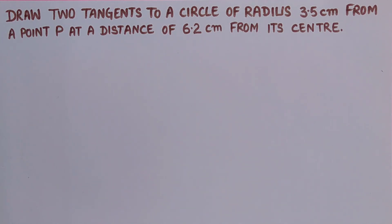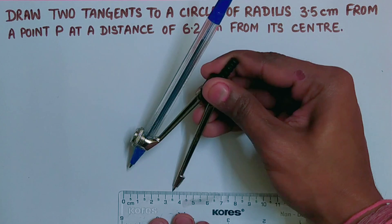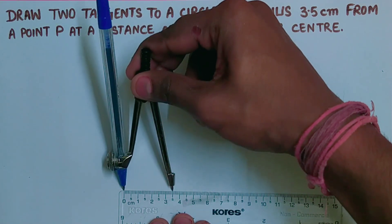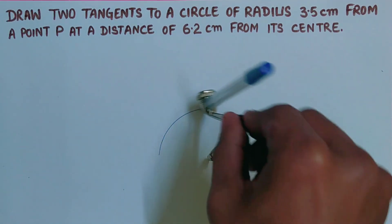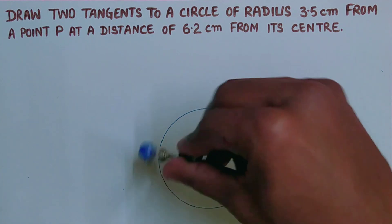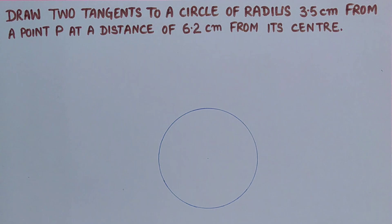The first step is we have to draw a circle whose center is O and radius is 3.5 centimeter. Now with the help of scale we will measure 3.5 centimeter. After this you mark this center as O.